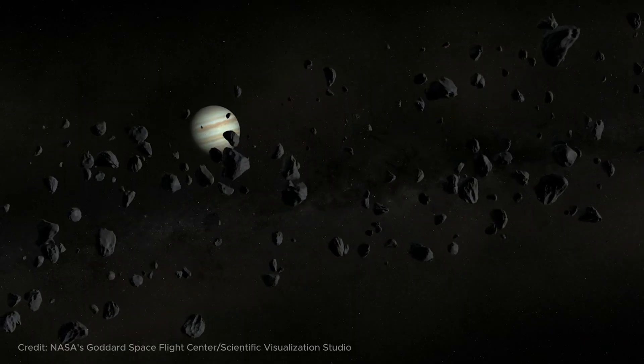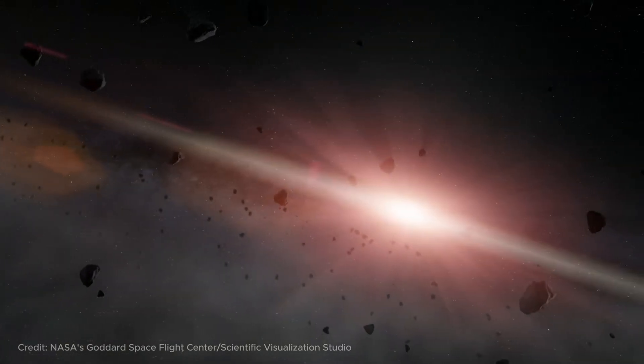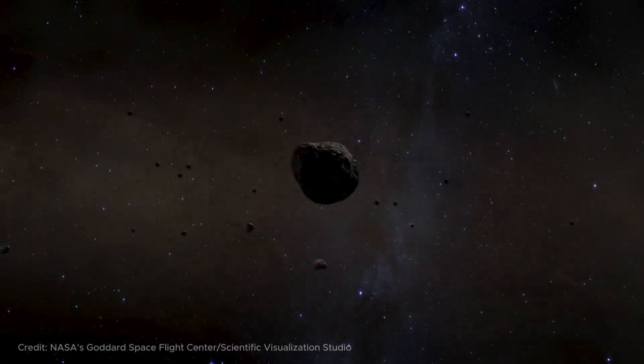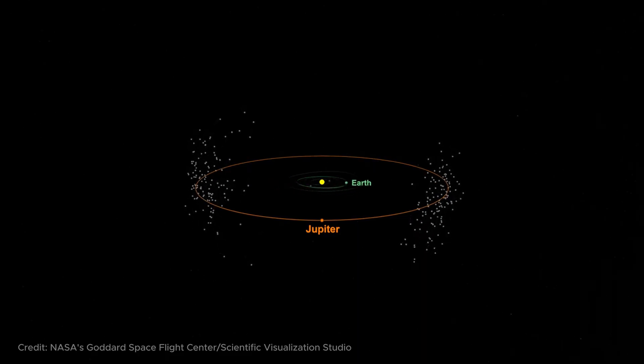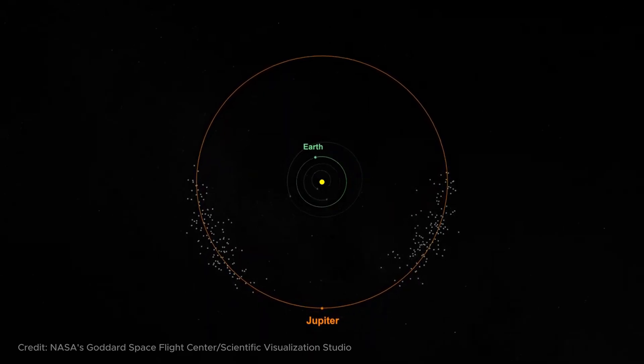However, at the Lagrange points L4 and L5 in the Jupiter-Sun system, there are plenty of asteroids that astronomers have long observed. These asteroids were initially named after heroes of the Trojan War from Greek myths.